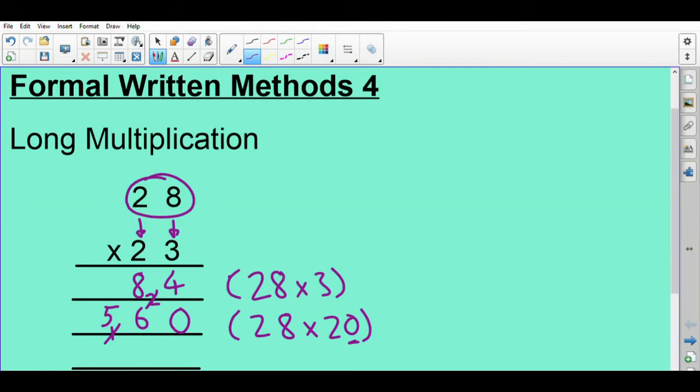Now I've got 84 there as the answer to this calculation. 560 here is the answer to this calculation. I can just do a quick mental check: 28 times 2 is 56, so double 28 is 56, times 56 by 10 to make it 10 times bigger is 560. So I'm happy with those two calculations. I now need to add them. You can see we've lined everything up nicely in columns. So I'm just going to add up: 4 add 0 is 4, 8 add 6 is 14, so carry the 1. 5 add 1 is 6. 644. So I'm happy with that answer because I'm looking at roughly 30 times 20, so it's going to be a bit more than 600.